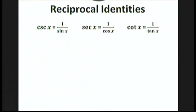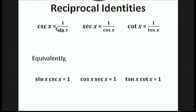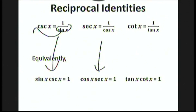Next, we have the reciprocal identities. Cosecant x is 1 over sine x, secant x is 1 over cosine x, and cotangent x is 1 over tan x. These identities follow right from the definitions of these three reciprocal functions. If we bring the denominators over to the other side, we have the reciprocal identities in an equivalent form: sine x times cosecant x equals 1, cosine x times secant x equals 1, and tan x times cotangent x equals 1.